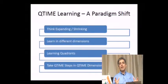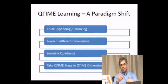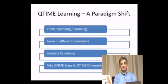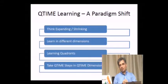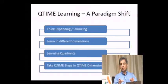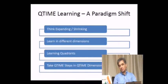We also went into understanding how bounded knowledge expands and shrinks over time. As time changes, new learning comes in and we have to forget old learning — some old learning shrinks while new learning expands. The most important paradigm shift in Q-time learning is learning in different dimensions, with quadrants, and taking Q-time steps in Q-time dimensions. These are the three important aspects.